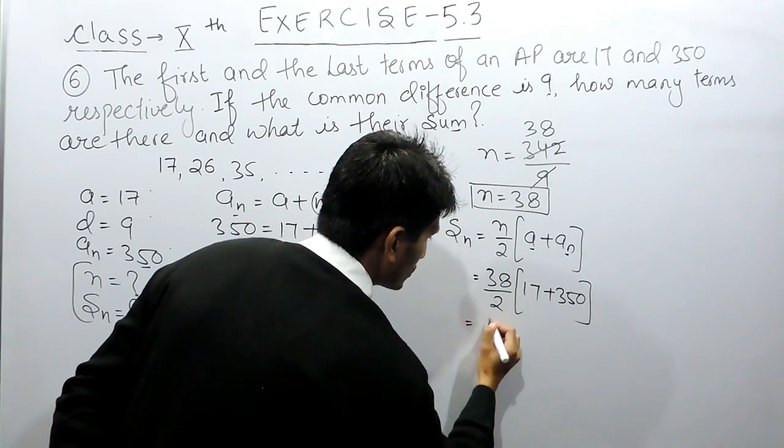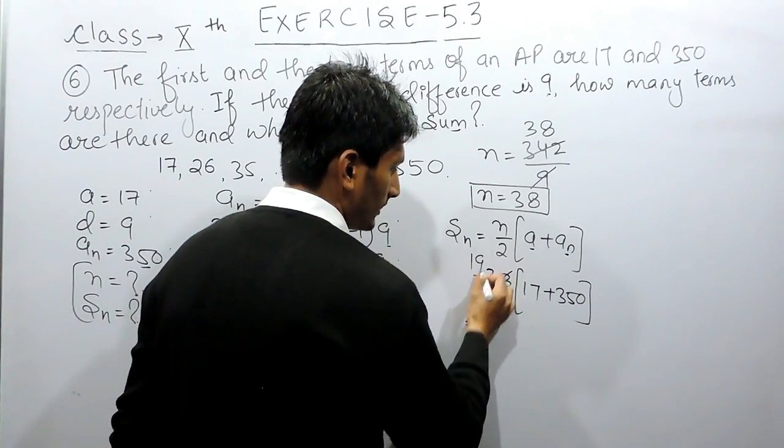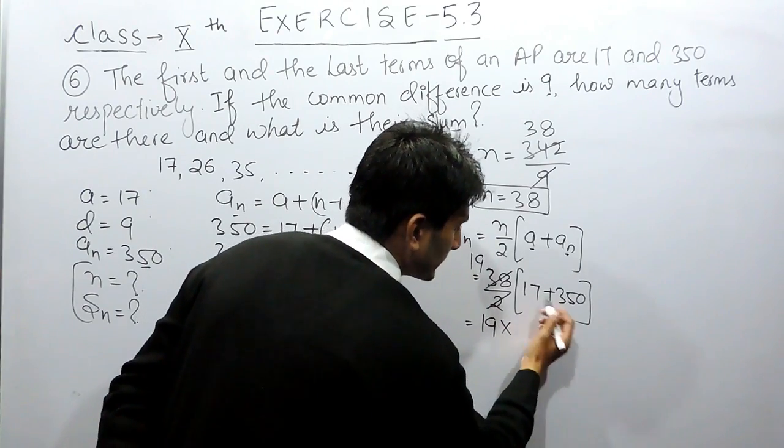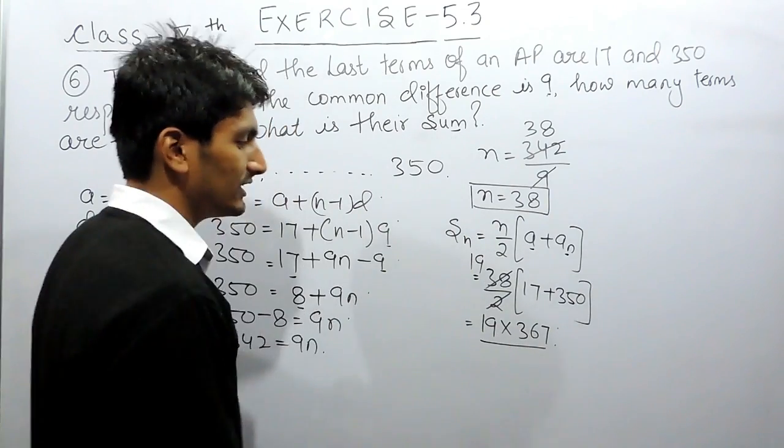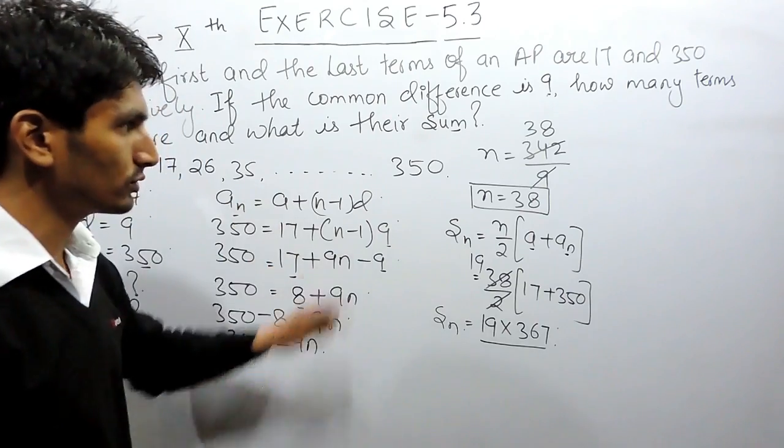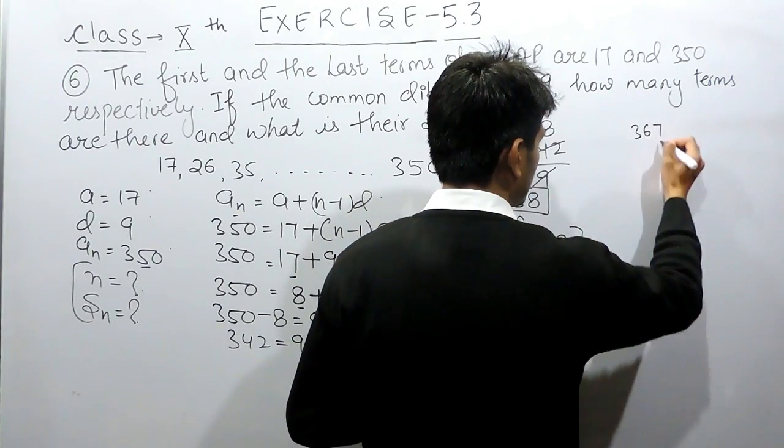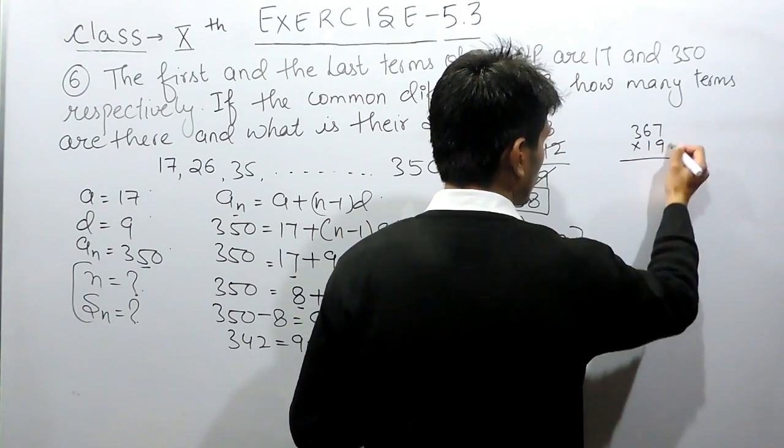So, this should be, 2 can be cancelled, this 2 ones are 19 times and this is 19 multiplied by, this is 367. So, multiplying these two numbers will give the sum of these terms. So, let's multiply this, 367 is multiplied by 19. So, 9 into 7, carry 6.